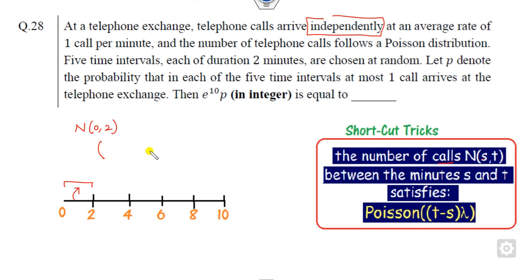After that, since they are independent, we can take the power five. The shortcut trick is the number of calls between zero to two is nothing but my Poisson distribution with parameter t minus s, that is two minus zero. What is the lambda for calling? It's one. So it follows the Poisson distribution with parameter two.